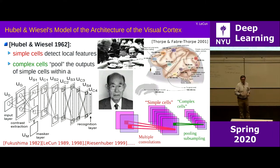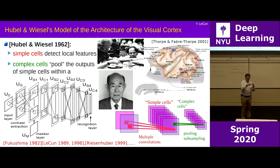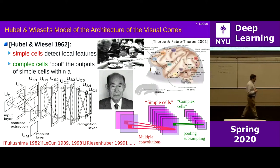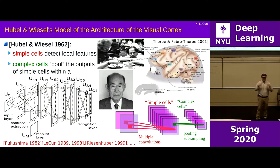Interestingly, vertebrates made an evolutionary mistake: the wires collecting information from the retina are in front of it, blocking part of the view and requiring a hole to be punched through the retina — creating a blind spot where the optic nerve exits. Invertebrates like squids and octopuses got it right, with wires coming out the back of the retina.